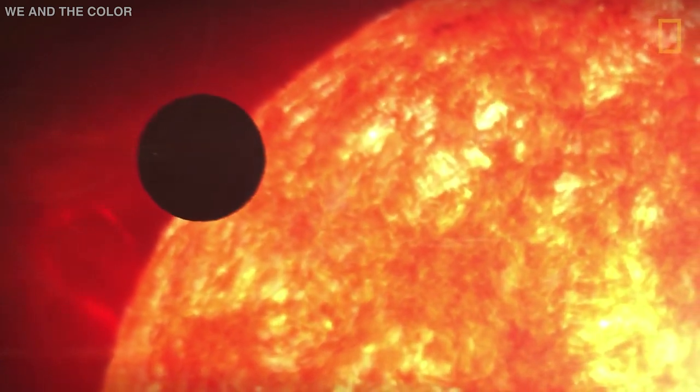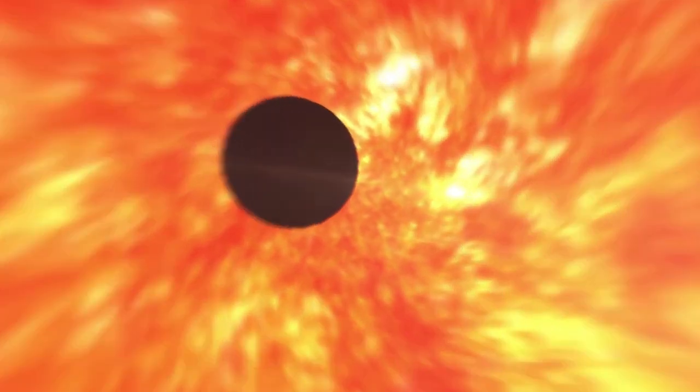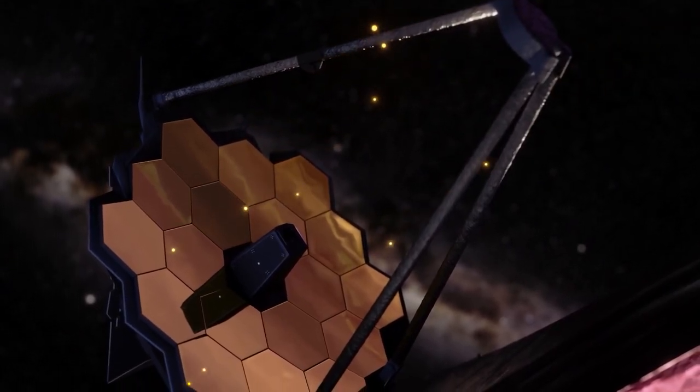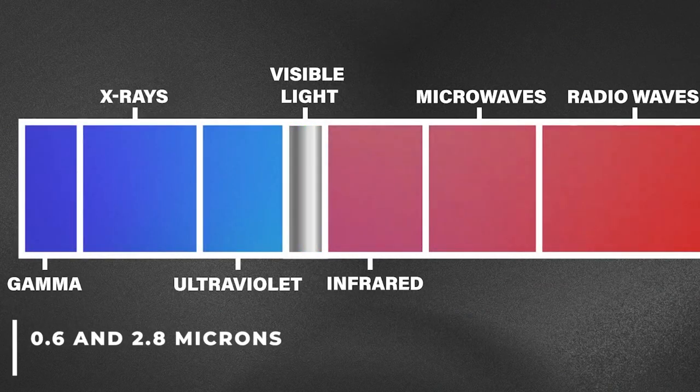It resulted in a light curve showing the overall dimming of starlight during the transit and a transmission spectrum revealing the brightness change of individual wavelengths of infrared light between 0.6 and 2.8 microns.